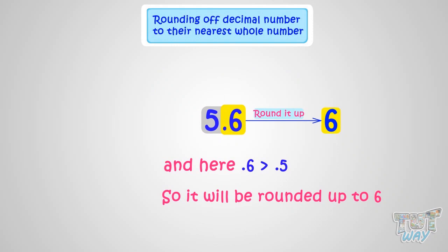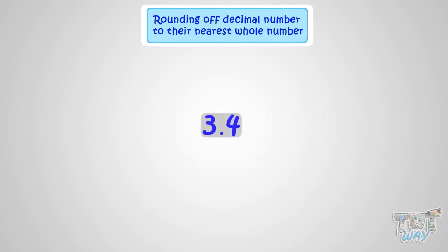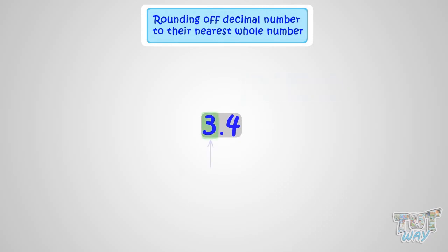Now let's see more examples. The next number we have to round off to the nearest whole number is 3.4. What does it mean? It means 3 and 0.4. That is, it has a whole number and a decimal number portion.